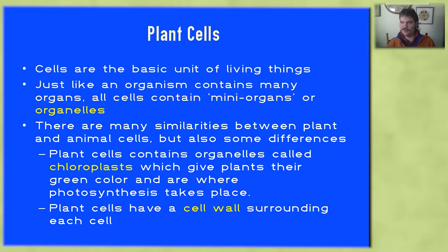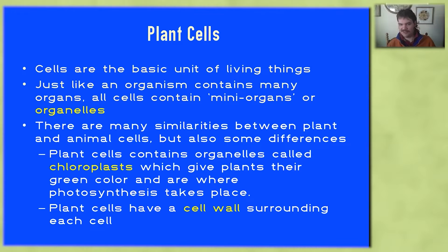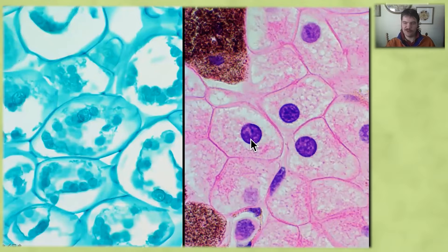Chloroplasts are where the green pigment in plants is located — the natural green pigment, not the fast green that we're using — and it's where photosynthesis occurs. Also important is that plant cells have a cell wall that surrounds each individual cell. So in order to visualize these differences, we will do a quick comparison of a plant cell and an animal cell.